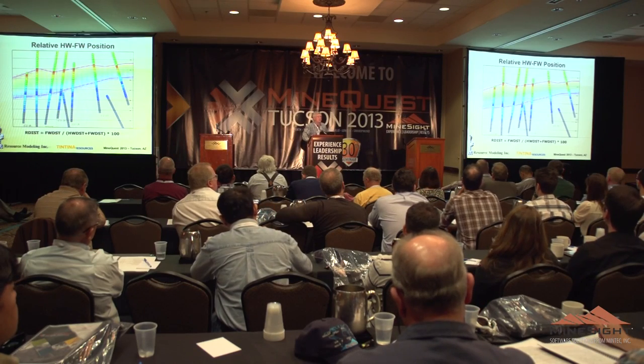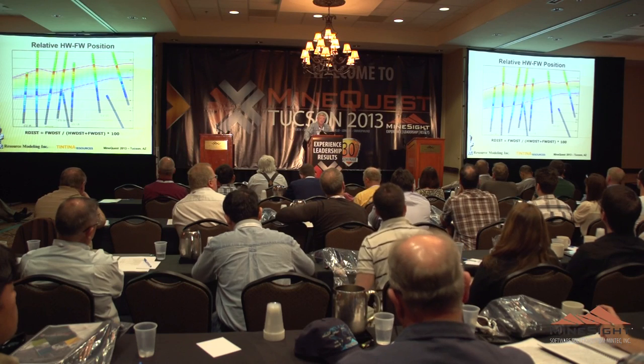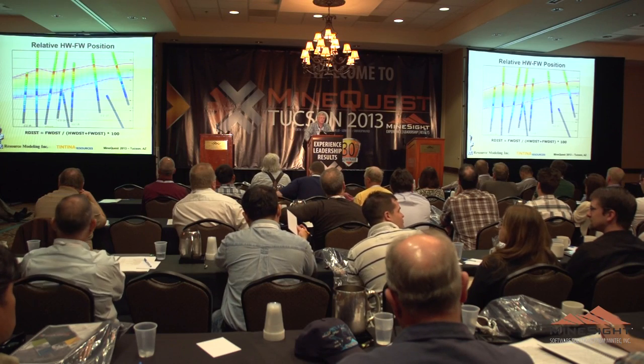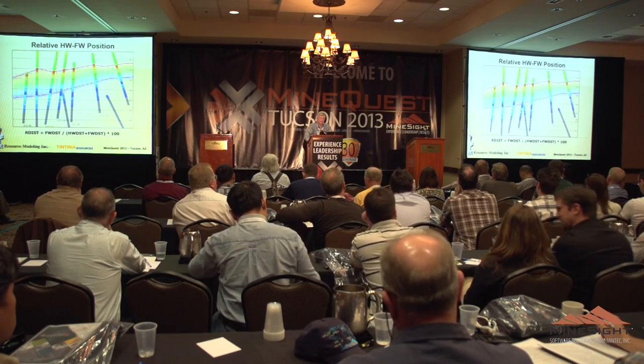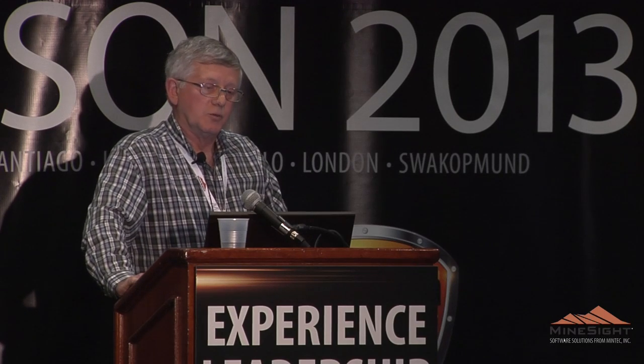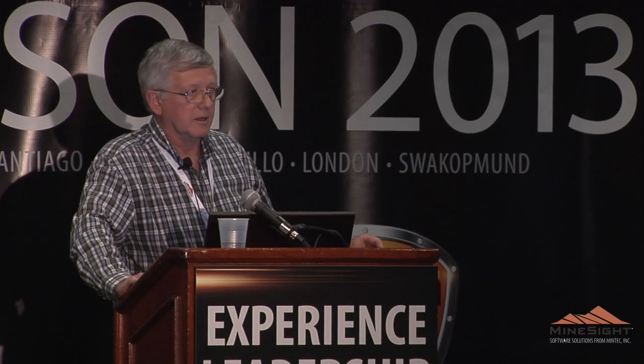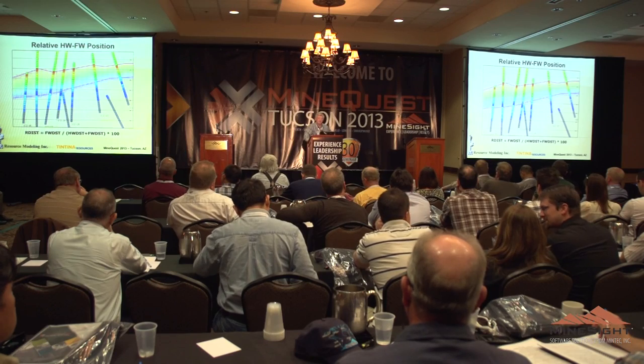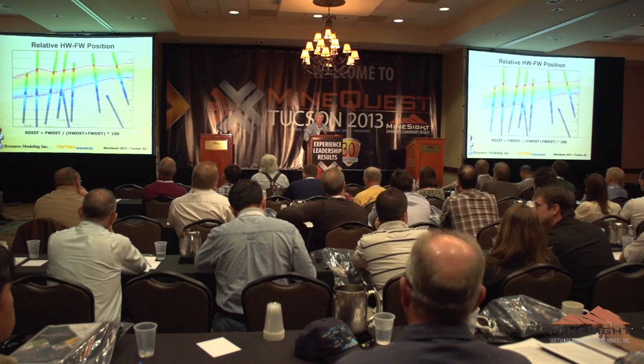When I originally used this on projects several years ago, I would use either a hanging wall distance or a footwall distance. Then I realized it would be better to use a relative distance. This simple expression converts that coordinate into a relative position: zero means it's right on the footwall, one hundred means it's right on the hanging wall. This really works well if the zone being modeled pinches and swells or has complex geometry — the relative position is better than using either a hanging or footwall distance alone.